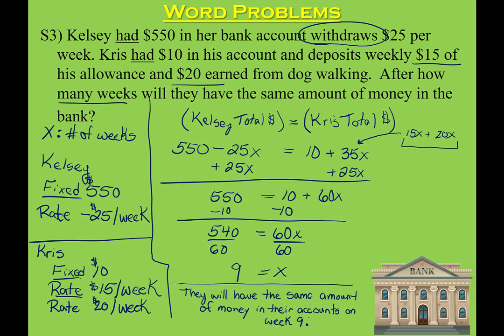When we solved the equation we had variables on both sides, so I chose to add 25x to both sides to get the x's together, giving me 60x. Then subtracting 10 from both sides to isolate x further, and dividing both sides by 60 since the opposite of multiplication is division, I got x equals 9. So they will have the same amount of money on the ninth week in their accounts, and after that they'll have different amounts again.